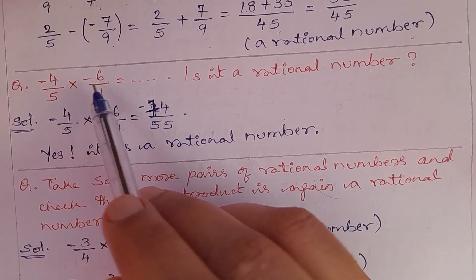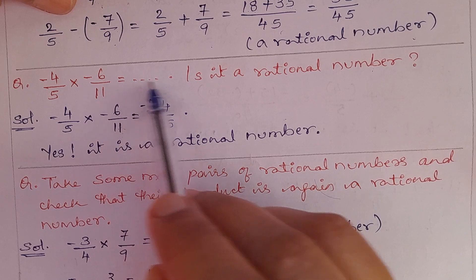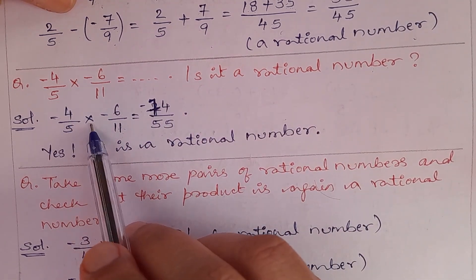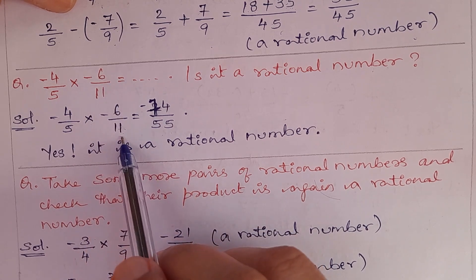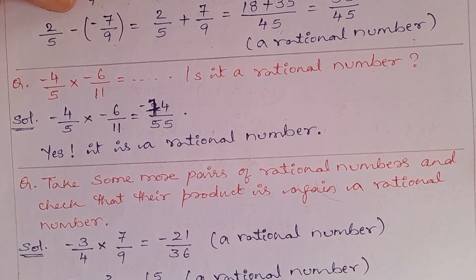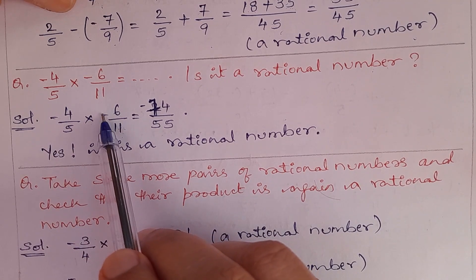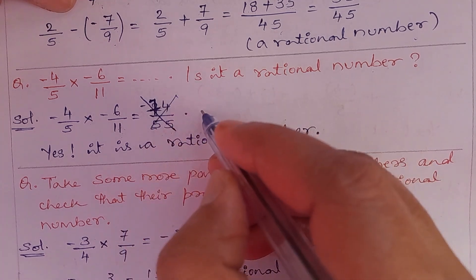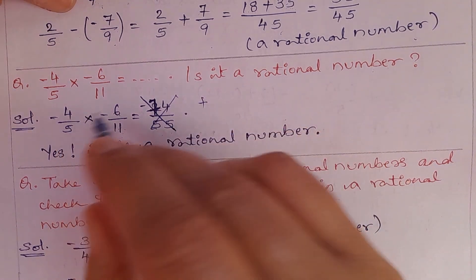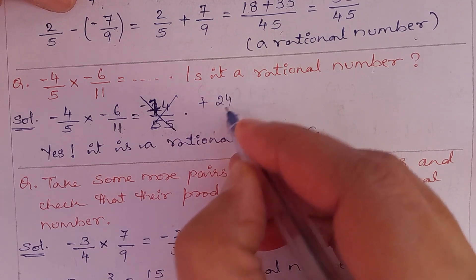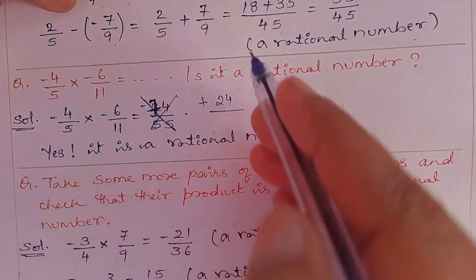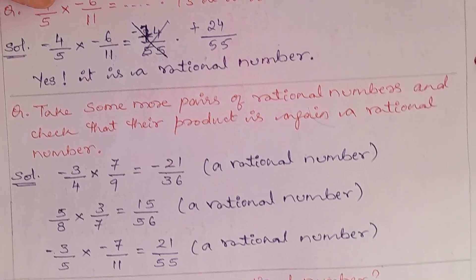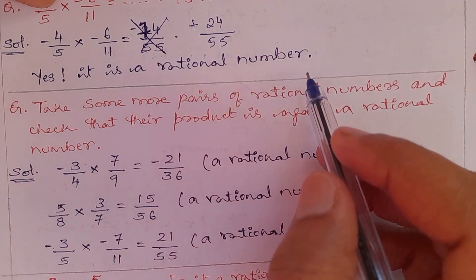Next: (−4/5) × (−6/11) — is it a rational number? Minus times minus is plus. 4 × 6 = 24, and 5 × 11 = 55. So the answer is 24/55, which is a rational number.